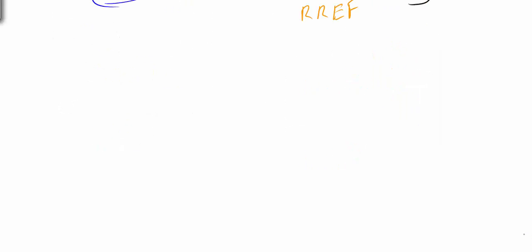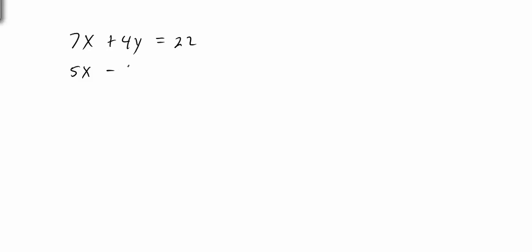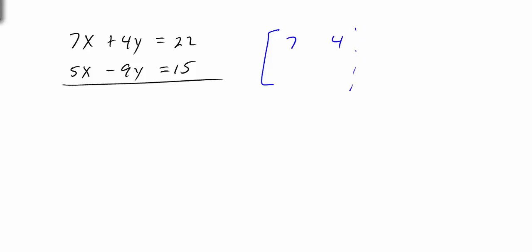Let's look at one last example with two equations: 7x plus 4y equals 22, and 5x minus 9y equals 15. We'll use the calculator. Transforming into a matrix — make sure x's and y's line up with the constants — we get row 1: 7, 4, 22, and row 2: 5, negative 9, 15.